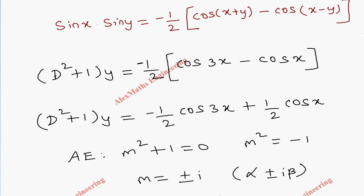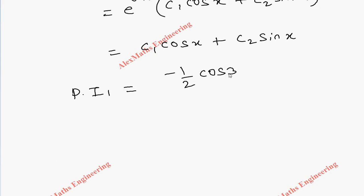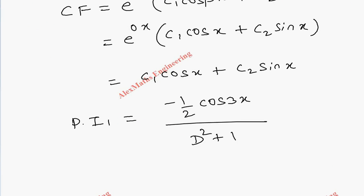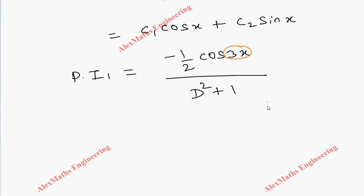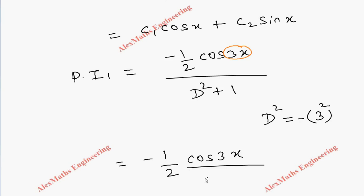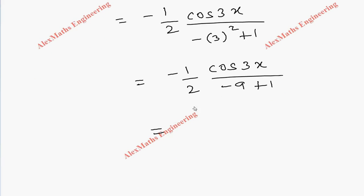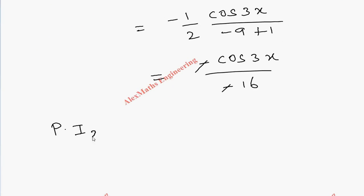Coming to Particular Integral 1, we take the first term: minus one-half cos 3x divided by (D² + 1). By the procedure, the coefficient of x in cos 3x is 3, so we substitute D² = minus 3² = minus 9. The denominator becomes minus 9 + 1 = minus 8, giving minus one-half cos 3x divided by minus 8, which equals cos 3x divided by 16 after cancelling the two negatives.